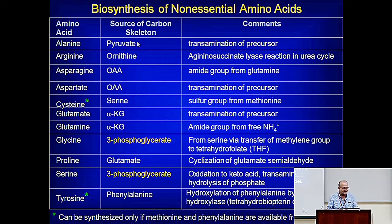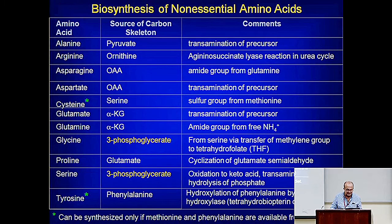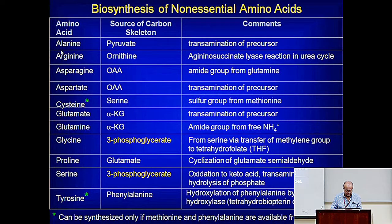ALT is a reversible enzyme, so you can start with glutamate and pyruvate and end up with alanine and alpha-ketoglutarate. This is very important — transamination reactions are always reversible. In most cases, the synthesis is the reverse of degradation.